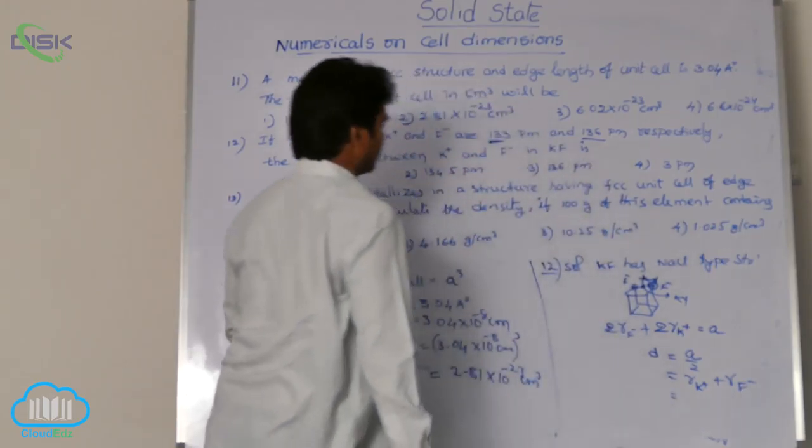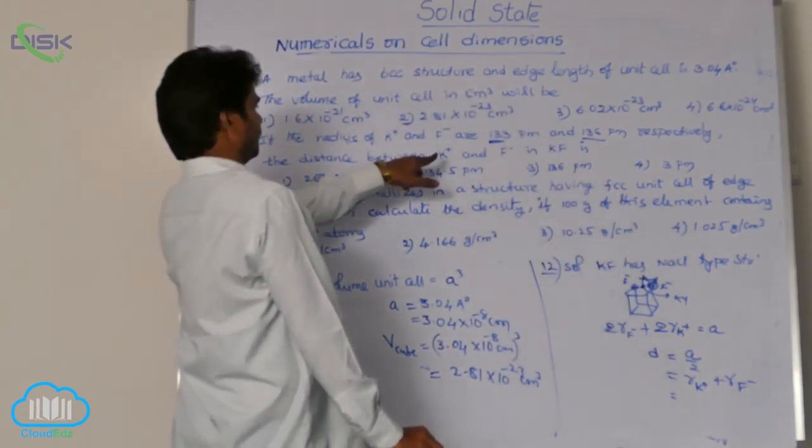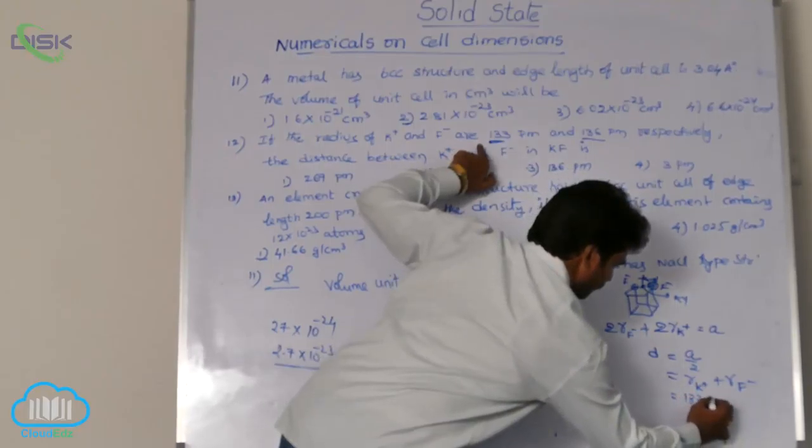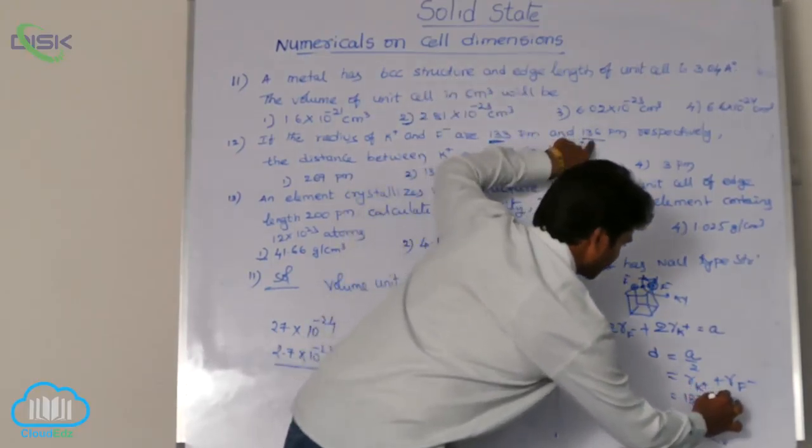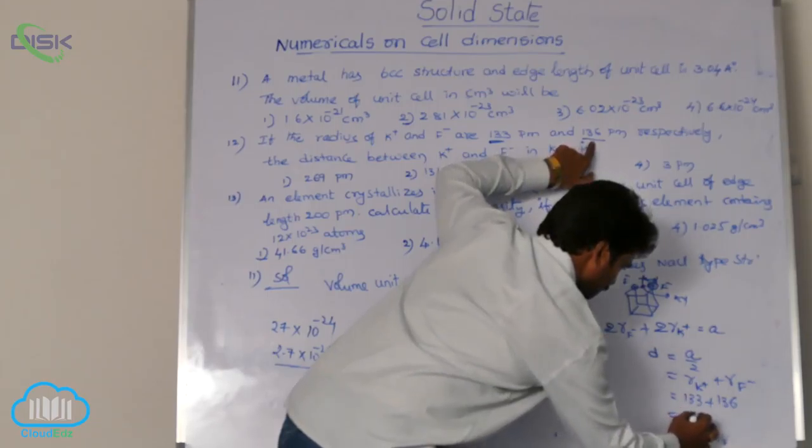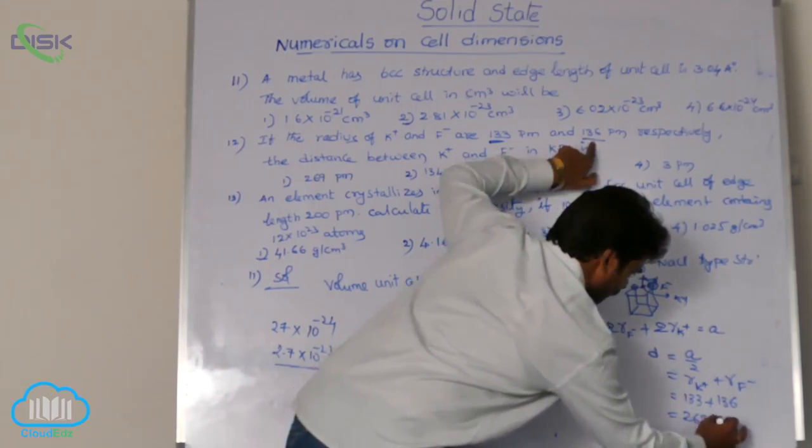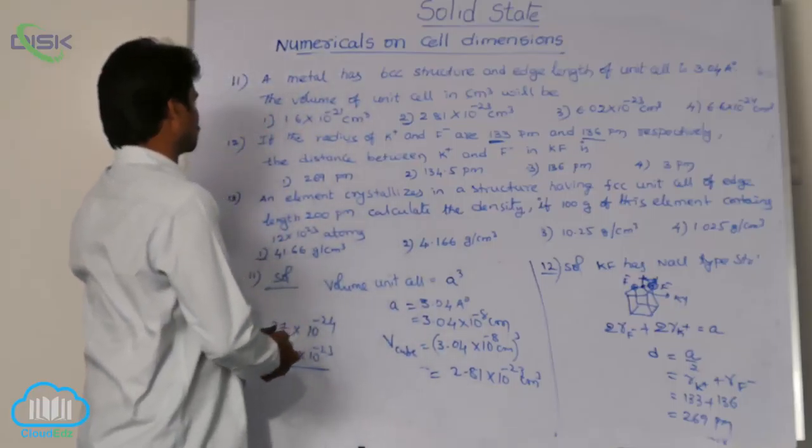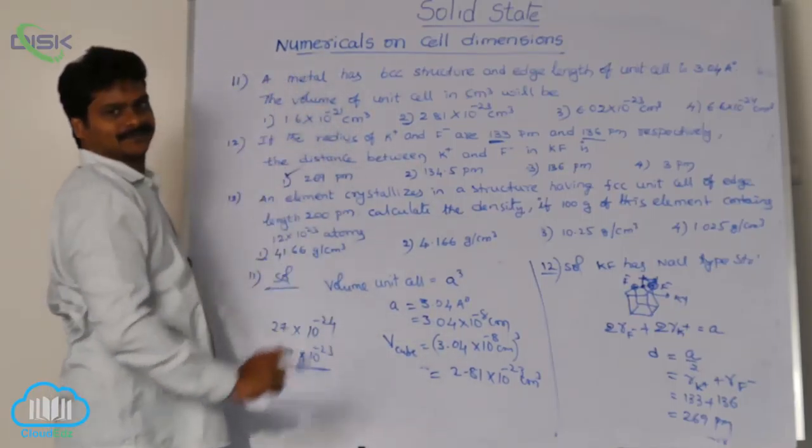What is radius of cation? See, that is given. Radius of cation is 133 plus radius of anion is 136. Now, the total answer is 269, 269 picometers. So, where the 269 picometers? It is in first option.